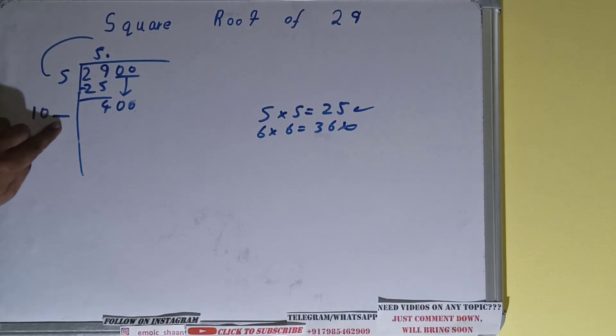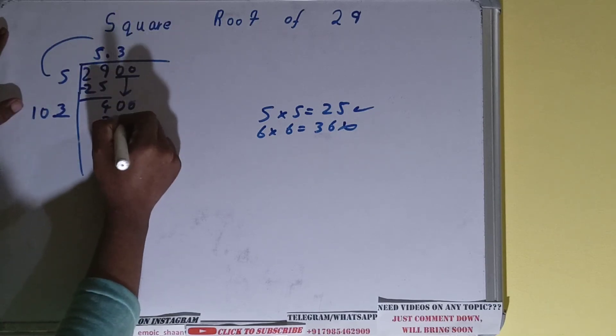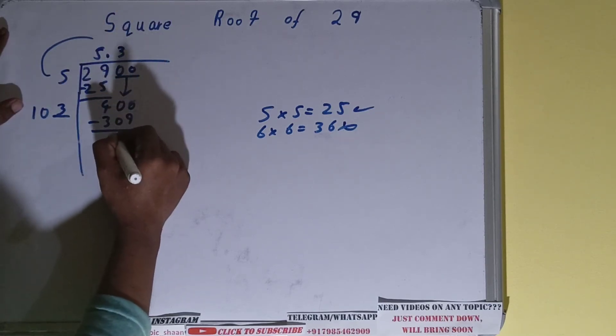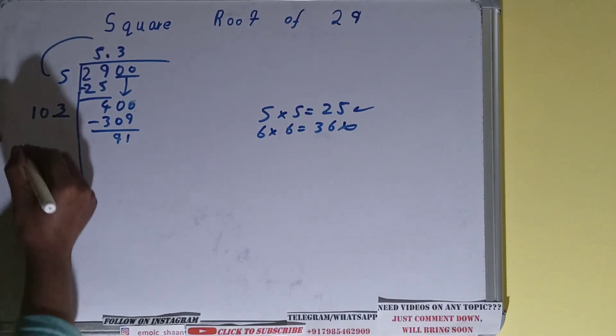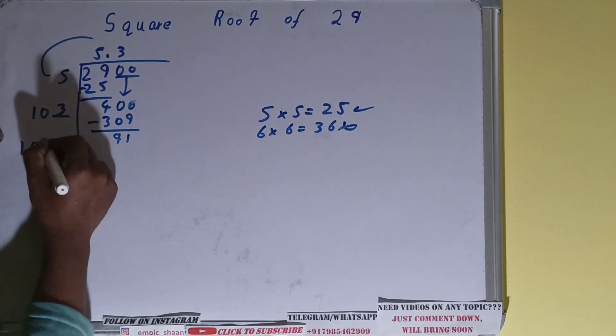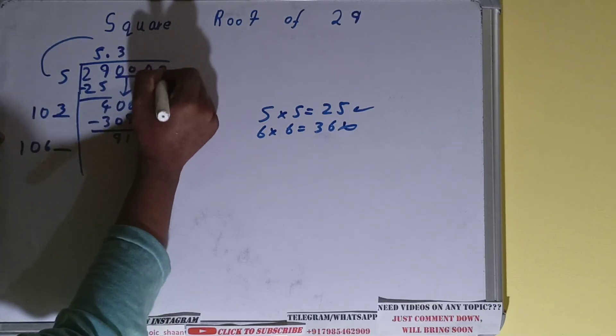What number is okay to take? If we take 3 here, we'll get 309, which is okay to take. So let's take 3. 103 times 3 is 309, we'll be left with 91. Now again do the same thing: 103 multiplied by 3, so add both numbers, it will be 106. Keep one digit extra, and for this again take one more pair of zeros.